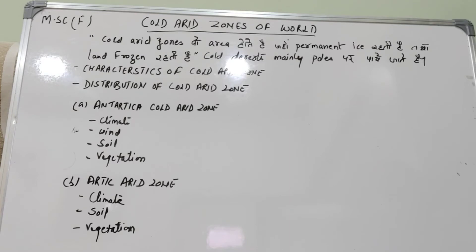अब हम लेंगे Antarctica cold arid zone। Antarctica महाद्वीप में अत्यधिक विस्तृत ice sheets पाई जाती हैं जो सम्पूर्ण विश्व की 86% बर्फ का भाग बनाती हैं। इसका क्षेत्र 13.9 million square kilometres है जो पृथ्वी की सतह का दसवाँ भाग है। इसकी मोटाई 1600 मीटर तथा ऊँचाई समुद्र से 4 kilometres तक होती है। यहाँ exposed mountain chains, dry valleys, तथा coastal oases पाए जाते हैं, परन्तु 95% से अधिक area snow और ice द्वारा ढका हुआ होता है।